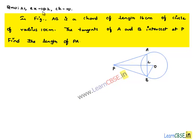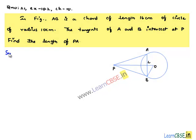Let us solve question number 21 from Exercise 10.2, Chapter 10. In the figure, AB is a chord of length 16 centimeters of a circle of radius 10 centimeters. The tangents at A and B intersect at P. Find the length of PA. Moving on to the solution.